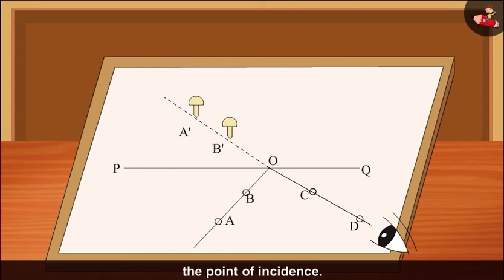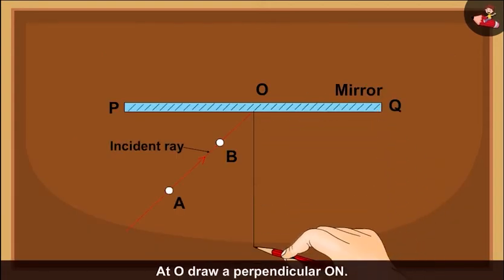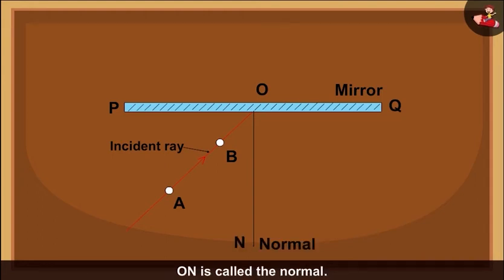The mirror is known as the point of incidence. AO is the incident ray. At O, draw a perpendicular ON. ON is called the normal. OD is the reflected ray.